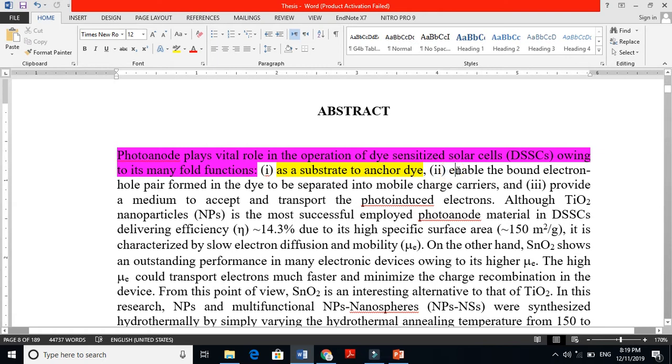Number second: enable the bound electron-hole pair formed in the dye to be separated into mobile charge carriers. This is the second feature. When we shine light on the dye, it generates electron-hole pairs and those electrons have to jump to the metal oxide substrate. So it provides those electrons to separate the hole and electron. Electron goes in one direction and hole goes in another direction.